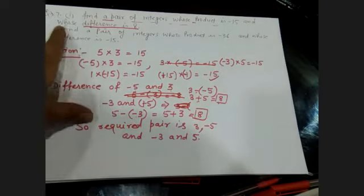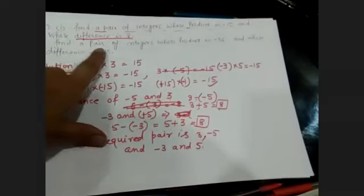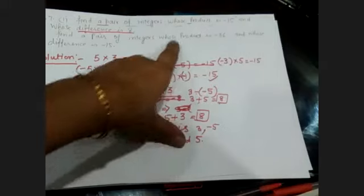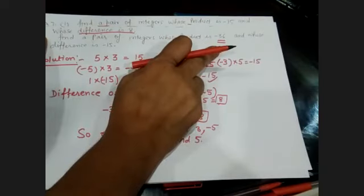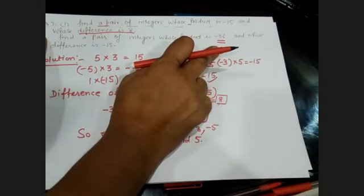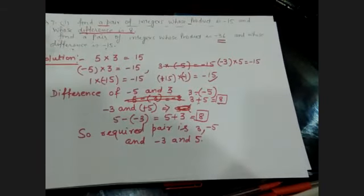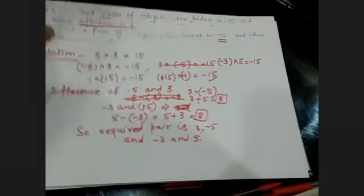This is the answer to the first part. Now we will do the second part of this question. Find a pair of integers whose product is minus 36 and whose difference is minus 15.